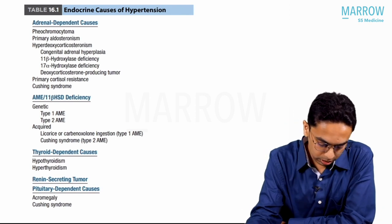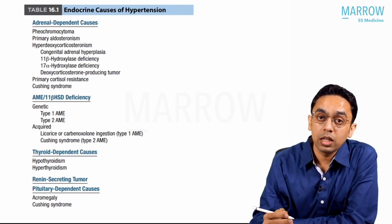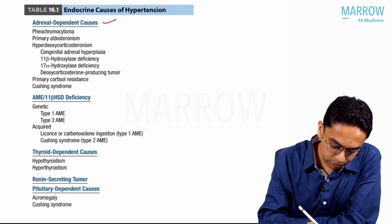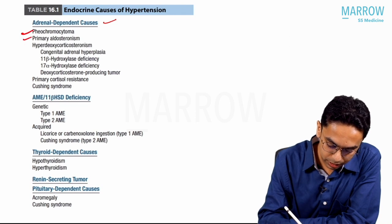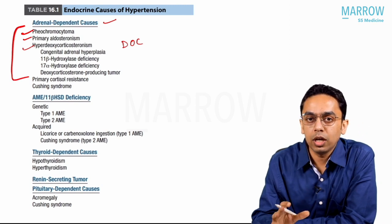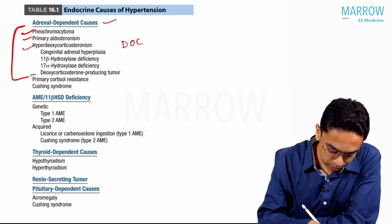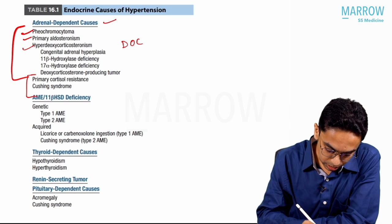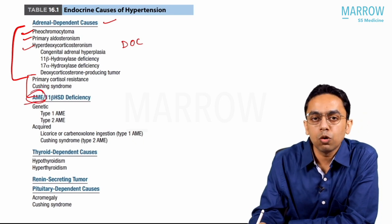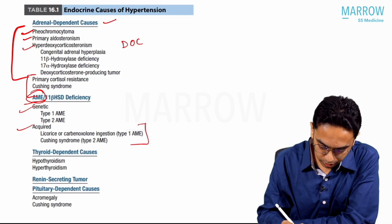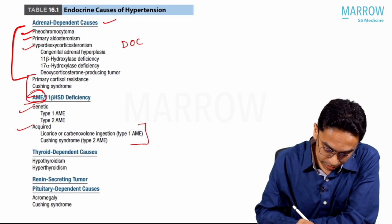In the chart from Williams, hyperparathyroidism is not shown. Adrenal-dependent causes include pheochromocytoma, primary hyperaldosteronism, and DOC-dependent causes. Cushing's and primary cortisol resistance are already discussed causes of endocrine hypertension. AME (Apparent Mineralocorticoid Excess) syndrome with 11-beta HSD deficiency — either genetic or acquired — was discussed in the last lecture. Both hypo- and hyperthyroidism cause endocrine hypertension.